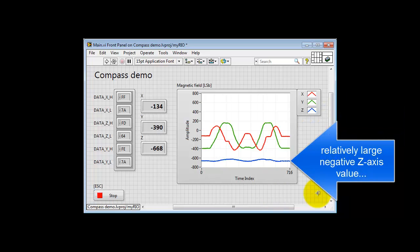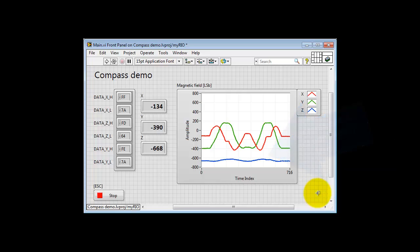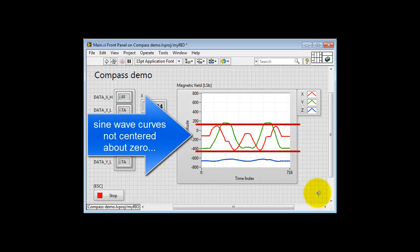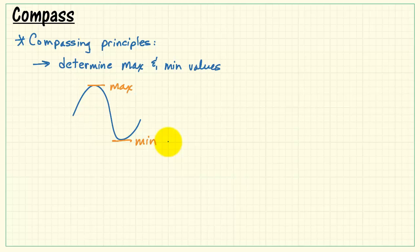Now as we look at what happened there, we see that there's a relatively large negative Z-axis value. The fact that it's kind of wobbling means that my sensor wasn't perfectly level. We also see that it's roughly like sine wave curves, but they are not centered about 0.